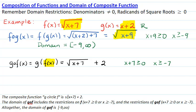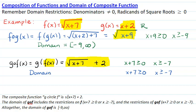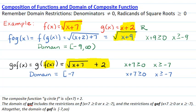We also consider the restriction of the final answer. The final expression is the square root of x plus 7, plus 2. This also has a square root radicand: x plus 7 must be greater than or equal to 0, or x greater than or equal to negative 7. Putting them together, the domain of the composite function g circle f of x is from negative 7 to infinity.